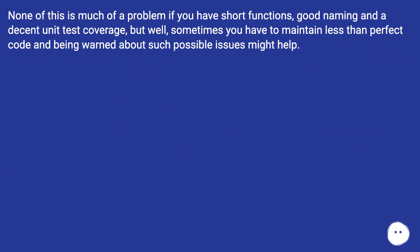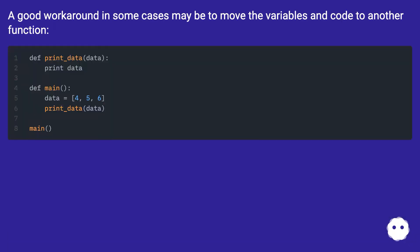Finally, built-in functions and types also live in the same namespace and can be shadowed the same way. None of this is much of a problem if you have short functions, good naming, and decent unit test coverage, but sometimes you have to maintain less than perfect code and being warned about such possible issues might help. A good workaround in some cases may be to move the variables and code to another function.